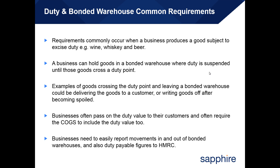Requirements commonly occur for duty and bonded warehouses when a business produces a good subject to excise duty — for example wine, whisky and beer. A business can hold goods in a bonded warehouse where duty is suspended until those goods cross a duty point. Examples of crossing the duty point could be delivering goods to a customer or writing goods off after becoming spoiled. Businesses often pass on the duty value to their customers and require the cost of goods sold to include the duty value. Businesses also need to easily report movements in and out of bonded warehouses and duty payable figures to HMRC.